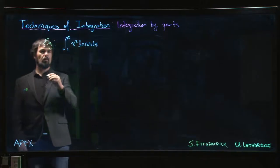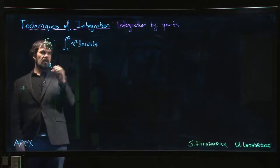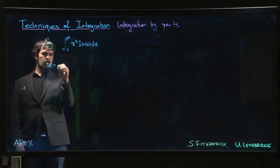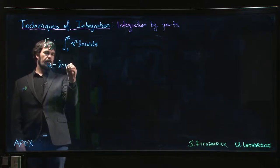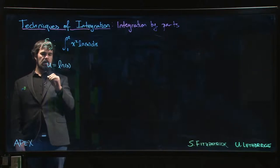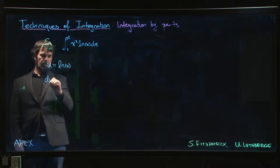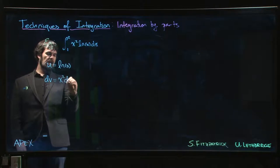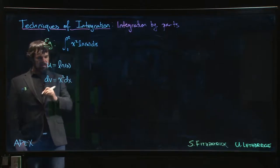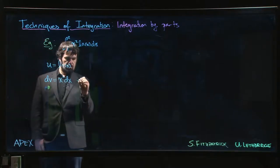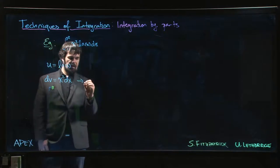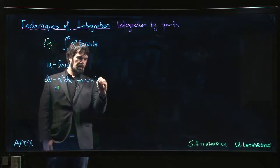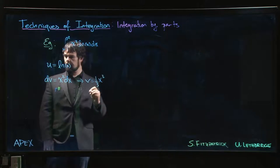So you typically want to try letting u be the log. That would leave dv to be x squared dx, and that seems like things are getting a little bit worse because then v is going to be one third x cubed. The powers are going up.